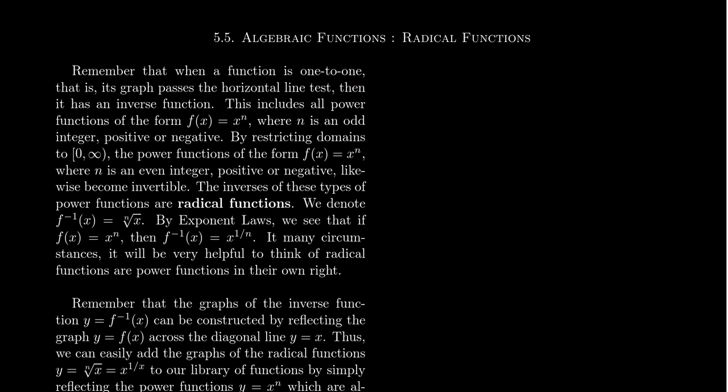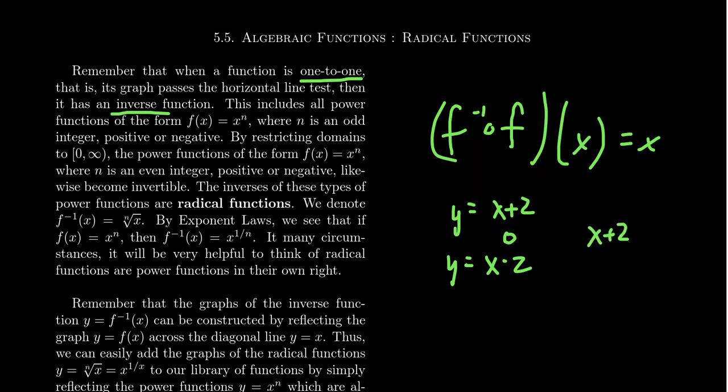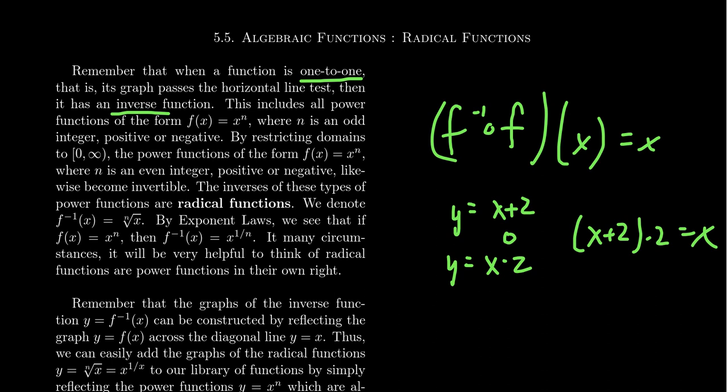If a function is one-to-one, then it has an inverse function, a function which undoes the original function. If you compose f with f inverse, you'll have the property that this is just the same thing as x itself, the identity function. A simple example would be if y equals x plus 2, and you have y equals x minus 2. When you compose these functions, it's as if nothing happens. If you take x plus 2 and then subtract 2 from it, you just end up with x. Addition and subtraction are inverse operations. Multiplication and division are inverse operations. If I take 2x and then divide it by 2, it's as if nothing happened.